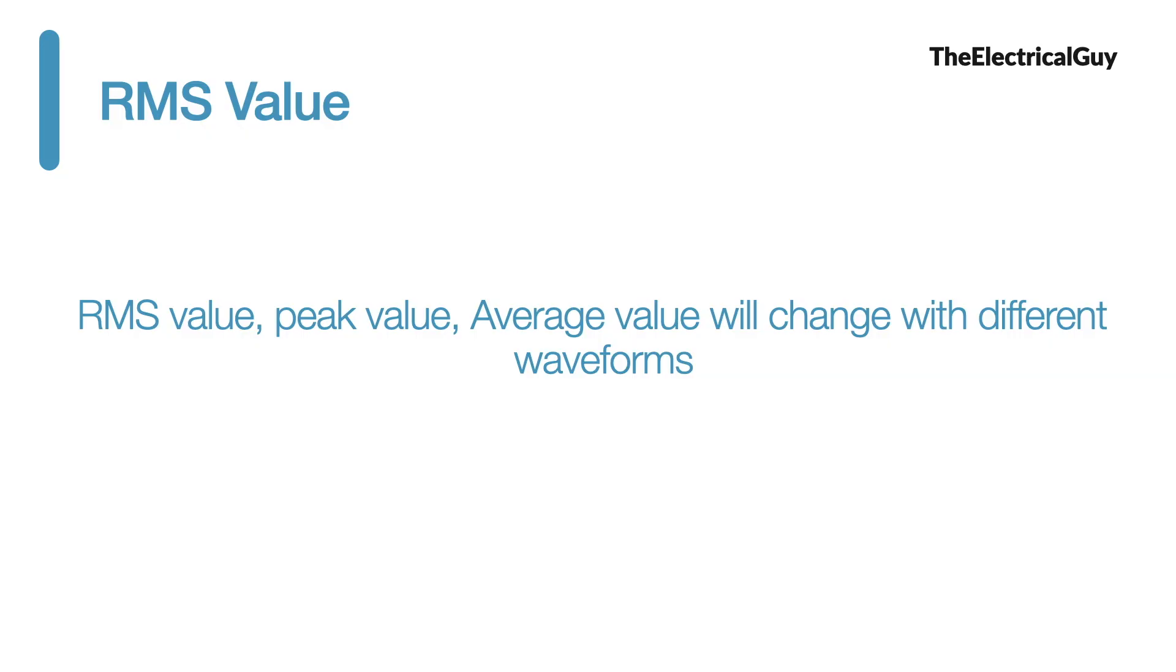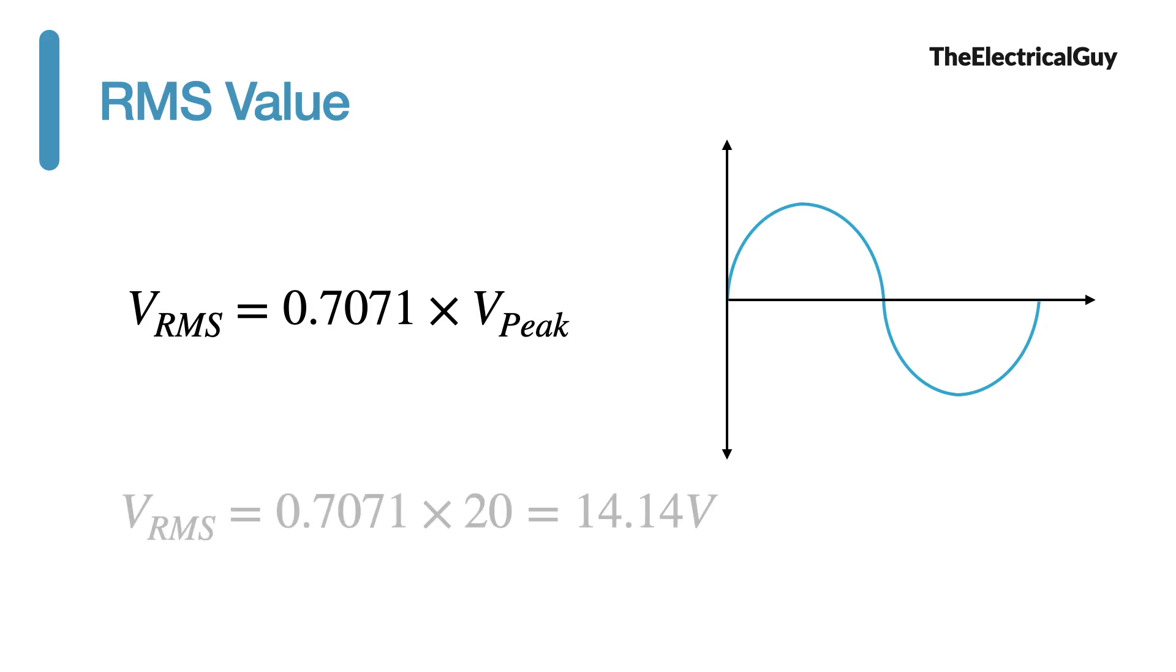To make things more easy we also have a formula to calculate RMS value or peak value. So we do not need to perform all the 4 steps every time. And the formula is given by this. Remember this value remains true only for pure sine wave. So if it is a square wave then this formula will not be applicable.